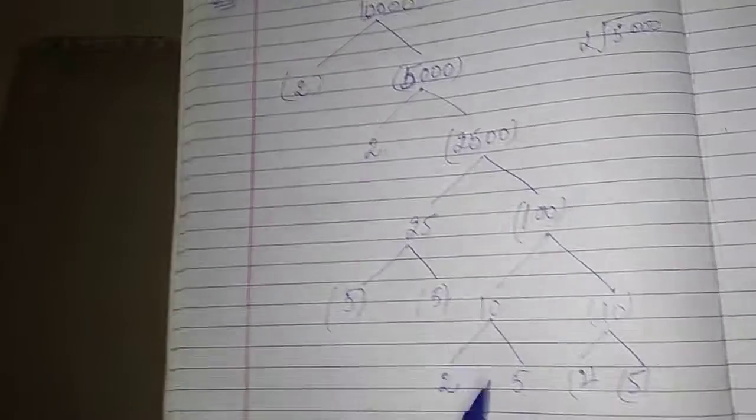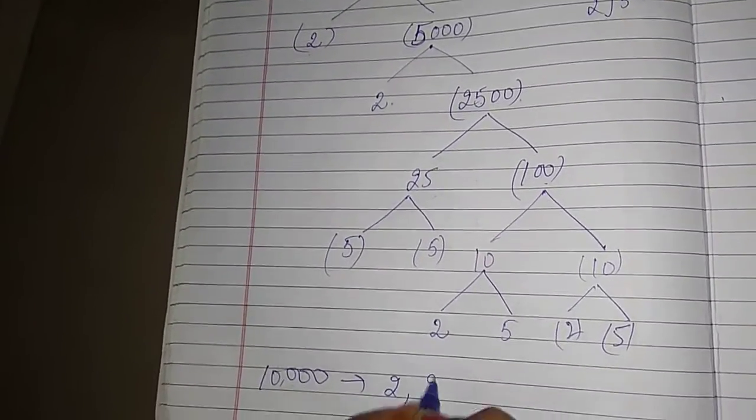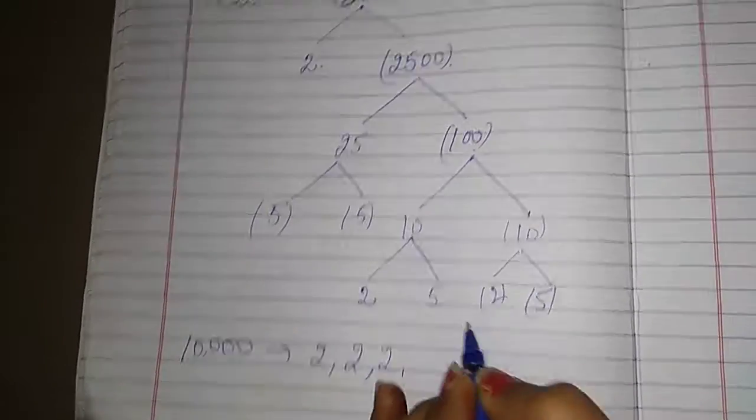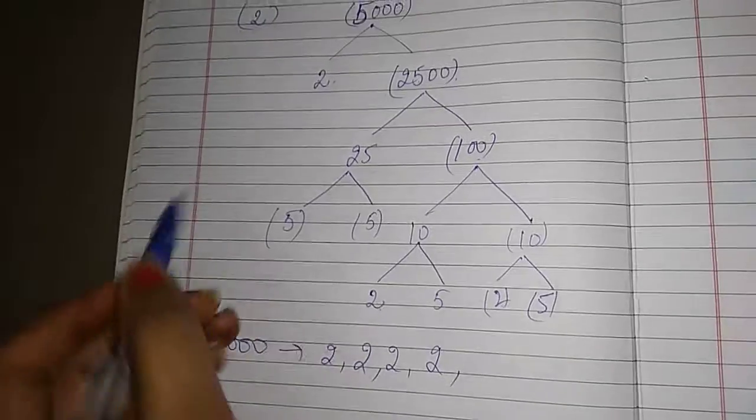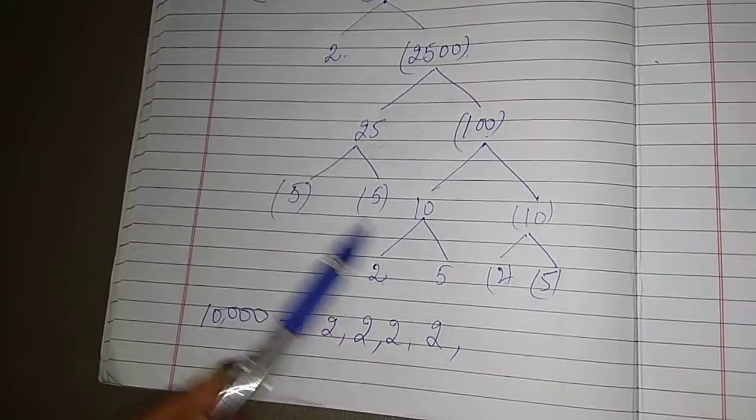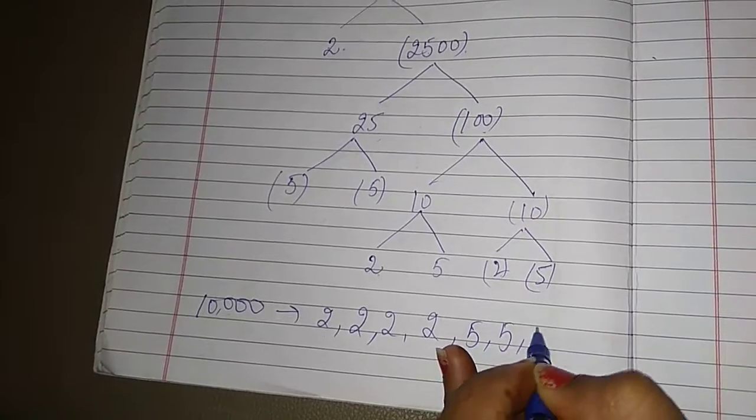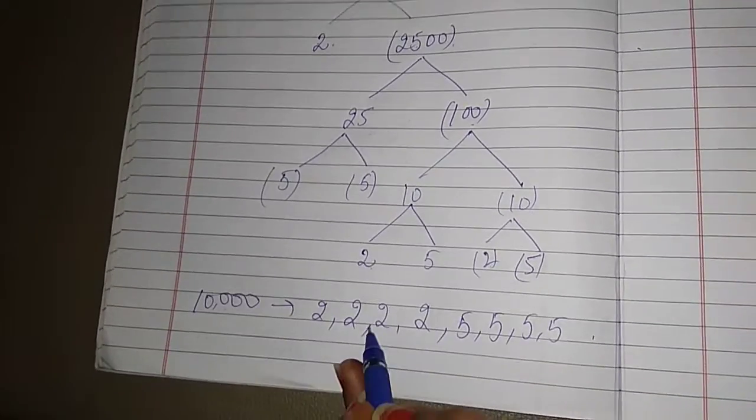2, 2. Again here down 2. Again 2. 5 how many times? 1, 2, 3, 4. And these are factors of 10,000.